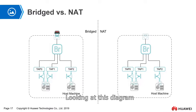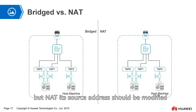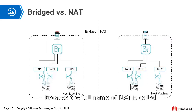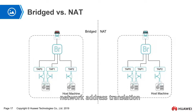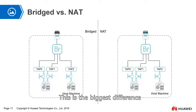Looking at this diagram, the source address is always shown in red with no modification. But in NAT, its source address should be modified. Why is NAT special? Because the full name of NAT is Network Address Translation, so the source address should be replaced. This is the biggest difference between bridge and NAT.